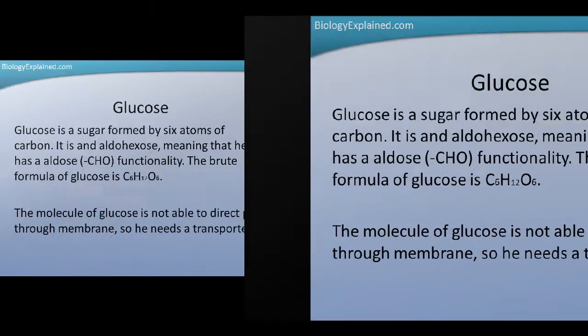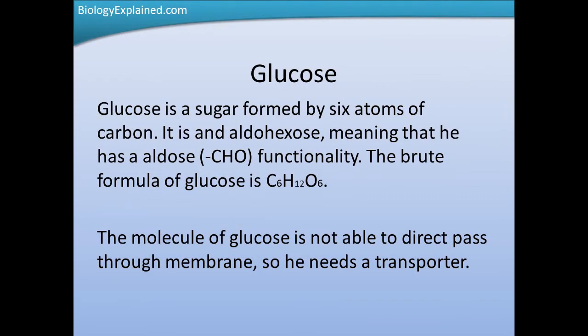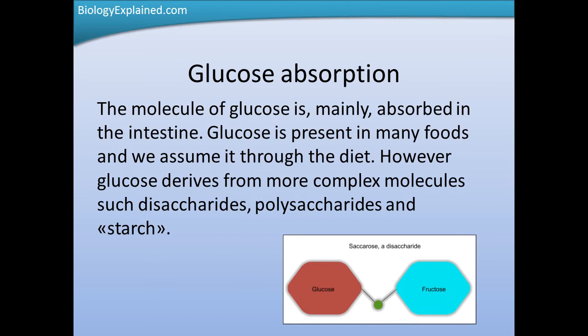The molecule of glucose is mainly absorbed in the intestine. Glucose is present in many foods and we consume it through the diet. However, glucose derives from more complex molecules such as saccharides, polysaccharides, and starch. In this example we can see a common disaccharide, saccharose. It is formed by two molecules, glucose and fructose. If the linking bond is broken, glucose and fructose are now single sugars.